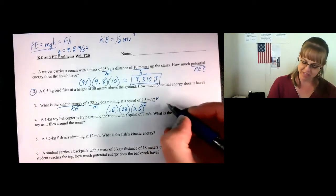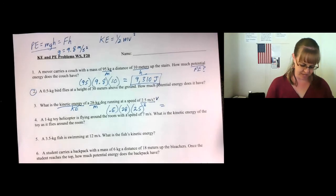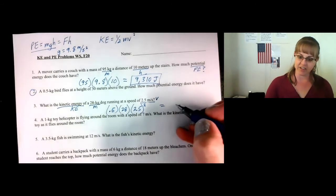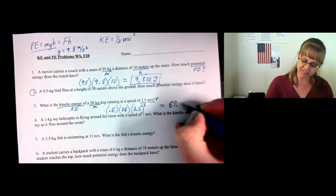Next, do your math. So I will type 0.5 times 28, times 2.5 squared. If I don't put any parentheses, it's only going to square the last number, which is what we want. Then do your math, and your answer will be 87.5.